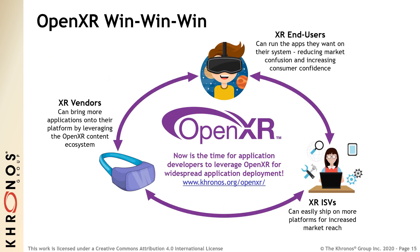So that was a very quick introduction to Khronos and OpenXR. OpenXR is gaining wide industry adoption because it's a win-win for all involved. Software developers can write an application once and deploy on multiple hardware platforms without porting, saving time and money and reaching a much larger market. XR hardware vendors win when they expose the OpenXR APIs on their platform by accessing a large library of OpenXR compatible applications. And most importantly, end users win as they will know that the XR applications they want to run will be compatible with the system they have purchased, growing customer confidence and growing the XR market for everyone.